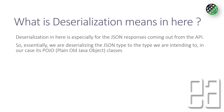So what does deserialization mean here? Deserialization is especially for the JSON or XML response coming out from APIs. Essentially we are deserializing the JSON types to the type we are intending to use — in our case, POJO classes, which are Plain Old Java Object classes.